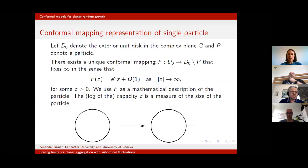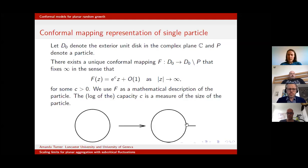We can use this function as a mathematical description of the particle — a one-to-one correspondence between the particle and the mapping f. I'll refer to this parameter c quite a lot in the talk. e^c is the capacity, so c is the log of the capacity, and it's a measure of the size of the particle. I'll be a little sloppy and just use the word 'capacity' when talking about c.